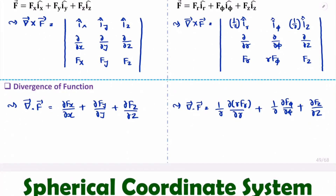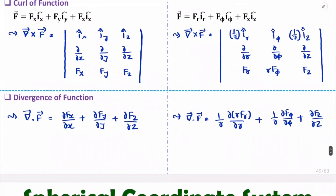These are the parameters you need to understand for the cylindrical coordinate system. Based on these, I'll be explaining examples in future videos. I hope you enjoyed this session — if you have anything to share, note it down in the comment section. Thank you so much for watching!